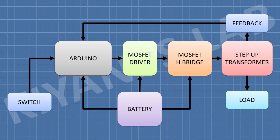This is the block diagram of the inverter. Arduino is the processing unit. A MOSFET driver is used to drive the MOSFETs. The MOSFET H-bridge converts direct current into alternating current. A step-up transformer is used to step up the voltages. The feedback unit consists of a rectifier and a voltage divider. The output voltage is given to the rectifier, then to the voltage divider, and then to the ADC of Arduino.